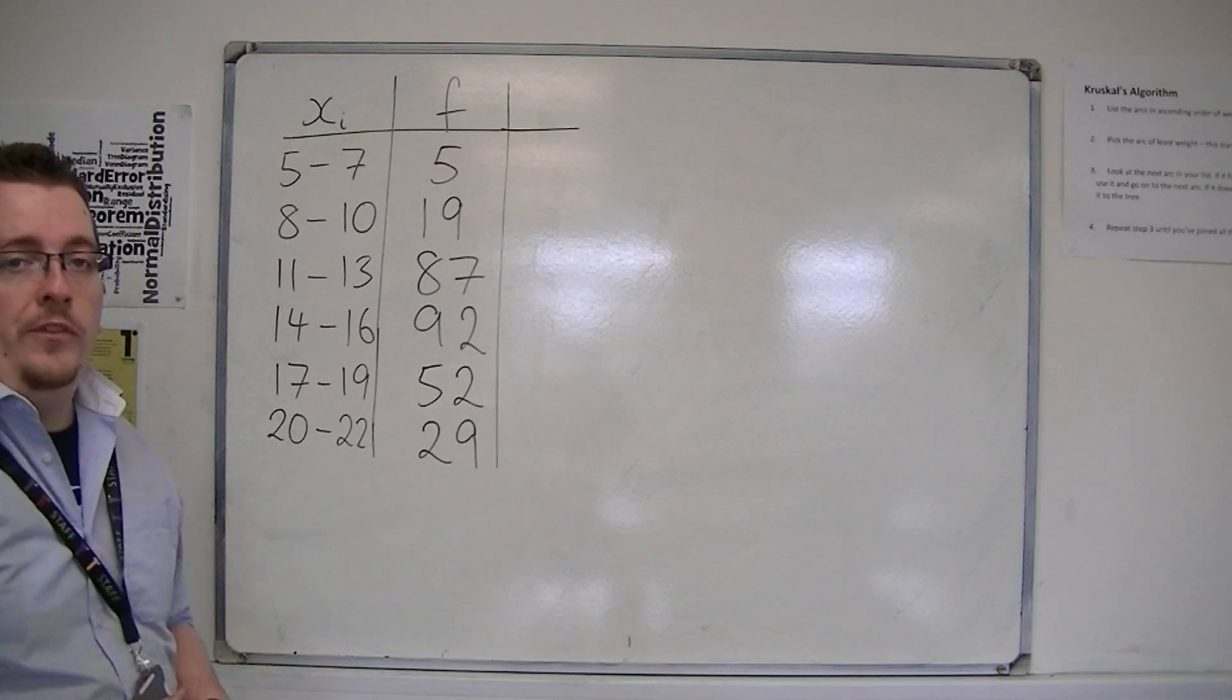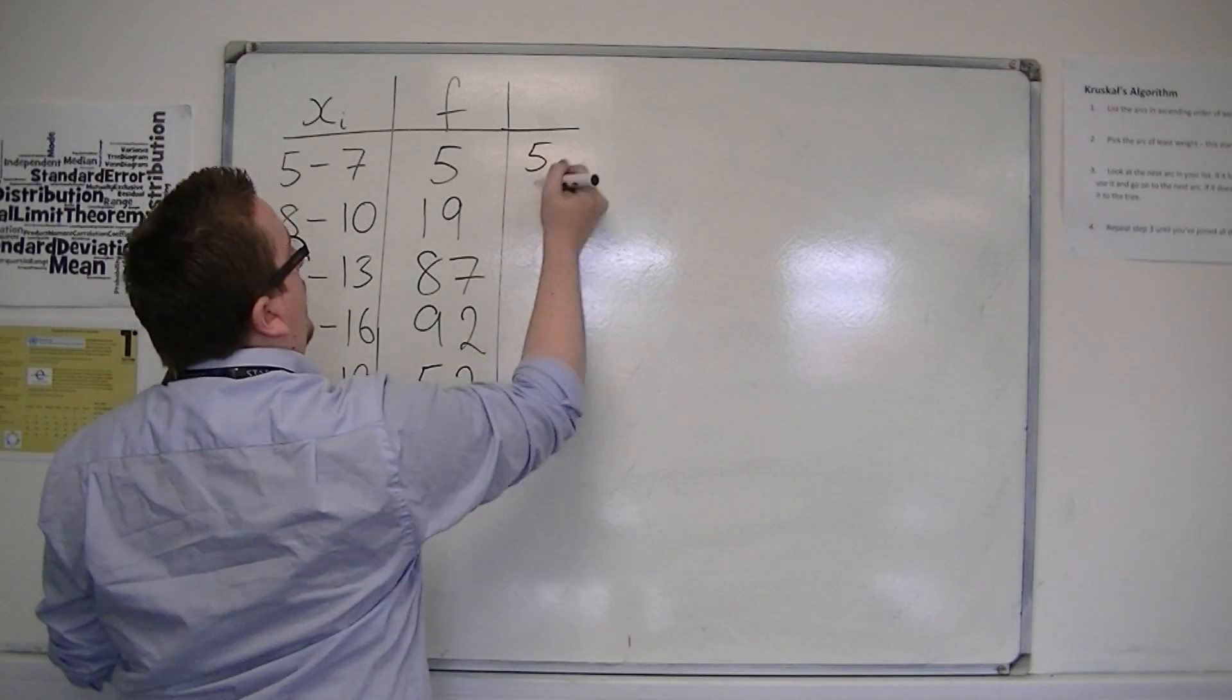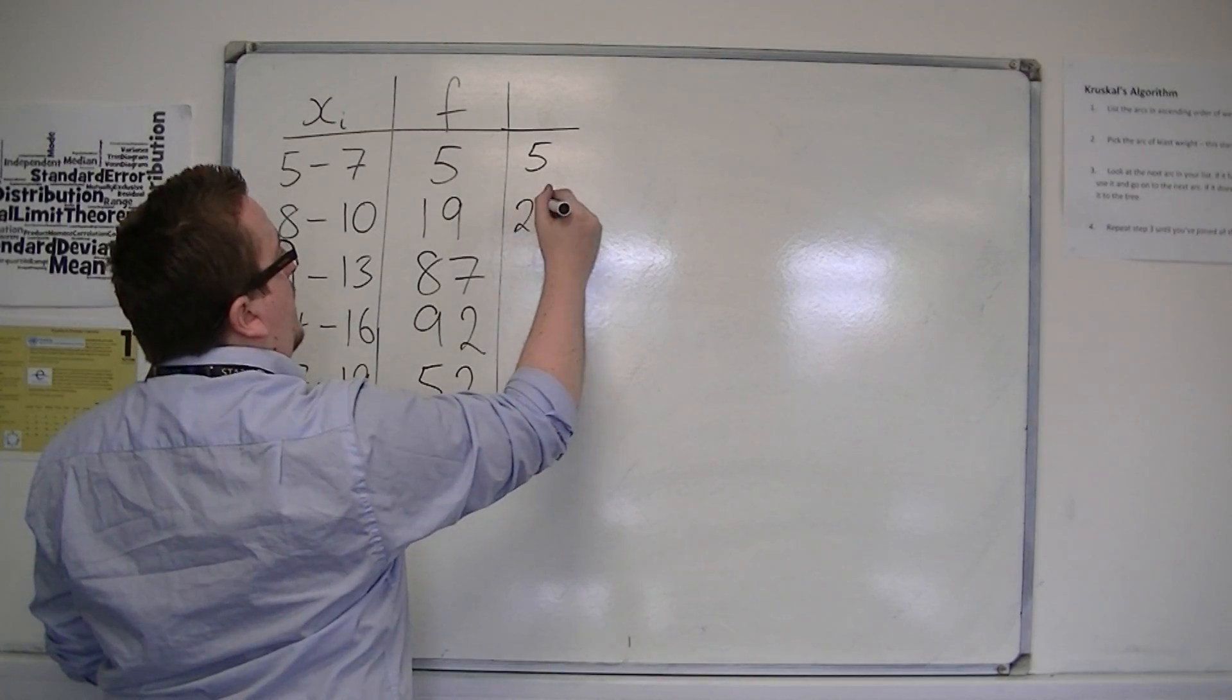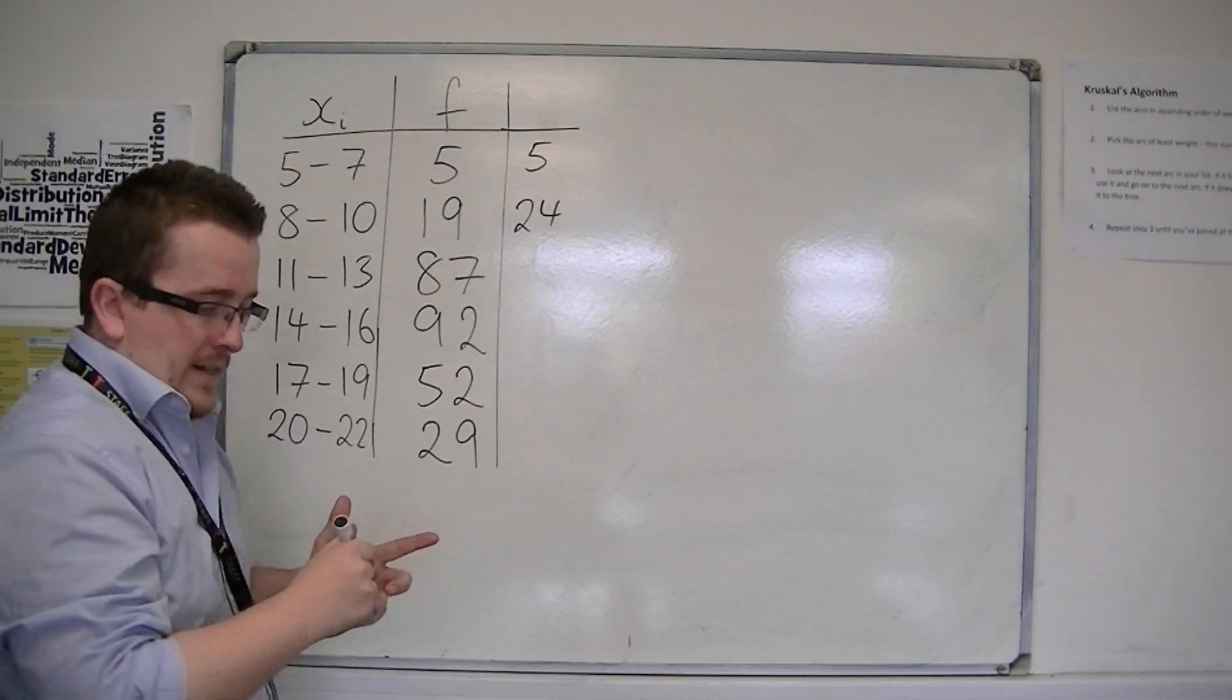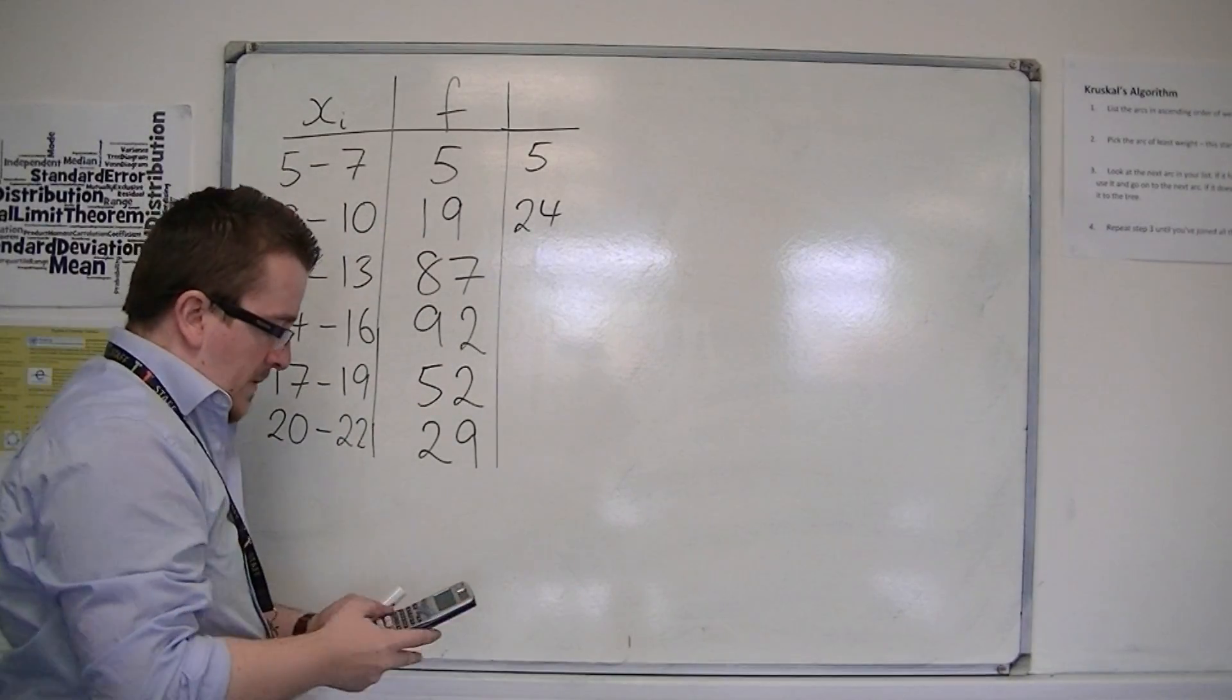Now, the cumulative frequency would be adding these numbers up as you went along. So you'd have 5, then 5 and 19 is 24, then add on 87. Each time I'm going to use a calculator just to make sure I'm getting these all right.